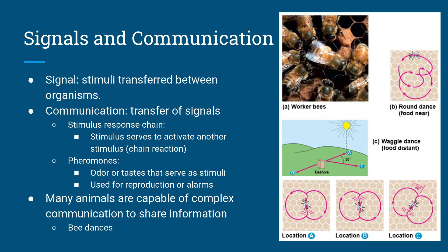Another way of communicating is through pheromones — odors or tastes, chemicals released by organisms that serve as stimuli for other organisms. For example, fruit flies release pheromones when they court; the male fruit fly taps the female with the foreleg and that releases the chemicals. Pheromones can also serve as alarm signals. In one experiment, minnows were placed in an aquarium and pheromones were injected near the top; all the fish congregated at the bottom to avoid the pheromone. They also work as reproductive signals.